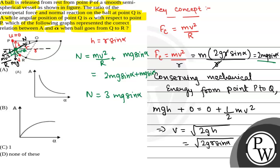Now, we have been given the ratio of centripetal force and normal reaction at point Q is A. A is equal to Fc by normal and Fc is 2mg sine alpha and normal is 3mg sine alpha. A will be equal to 2 by 3.